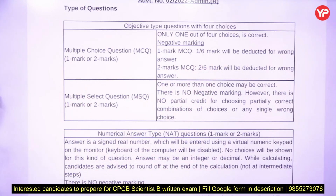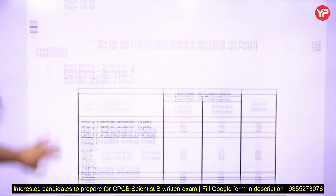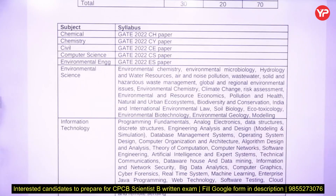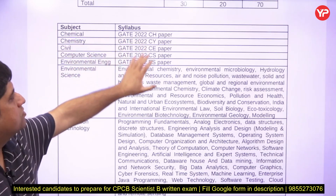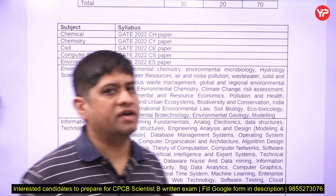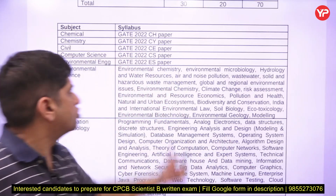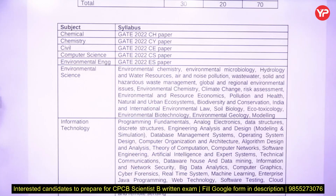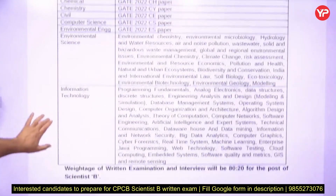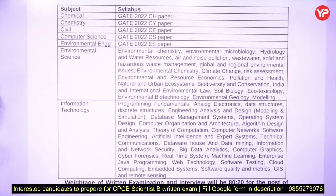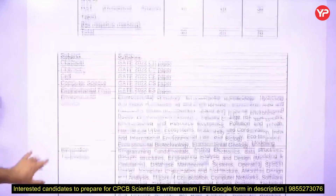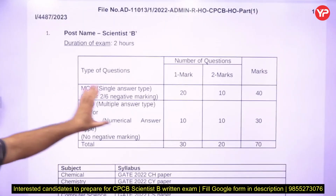Regarding the syllabus: if your background is chemical, chemistry, civil, computer science, environment, or mechanical — which has now been added — you should prepare the technical part of the GATE exam for your respective branch. Thirty percent is non-technical, so don't prepare the non-technical part. For environment science and information technology, specific syllabi have been provided.